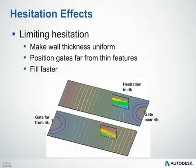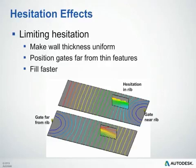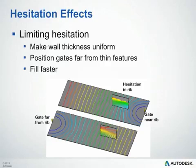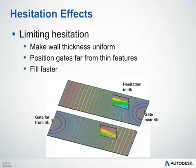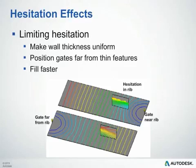Another thing to be aware of is any areas in the part that could cause hesitation effects. Hesitation is an unintended slowing down of the flow front. When the flow front slows down too much, it gets cold and in severe cases can even freeze off, as shown in the top image. Hesitation occurs when there is a large variation in wall thickness — for example, when a rib is much thinner than the nominal wall. Having a fast injection time can minimize hesitation by increasing shear heating. Another way to reduce hesitation is to gate as far as possible from thinner areas, as shown in the bottom image.